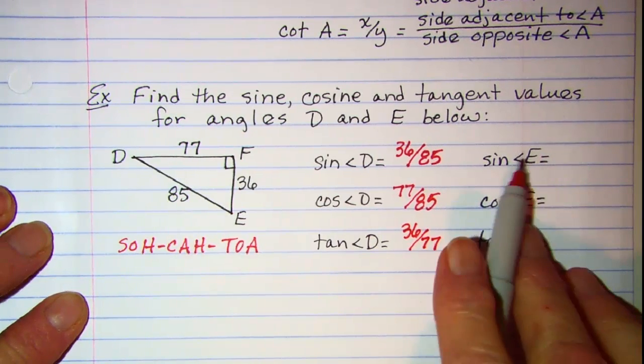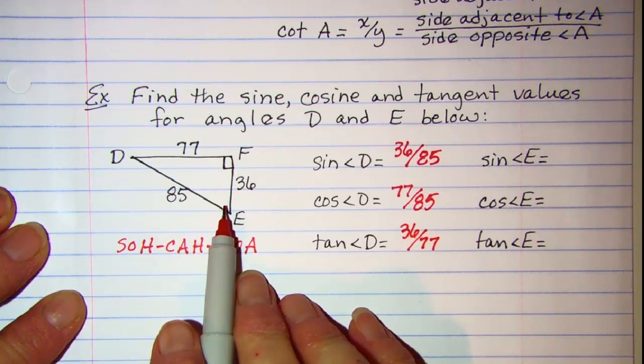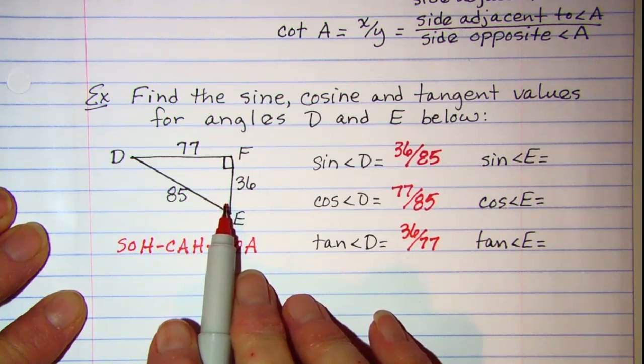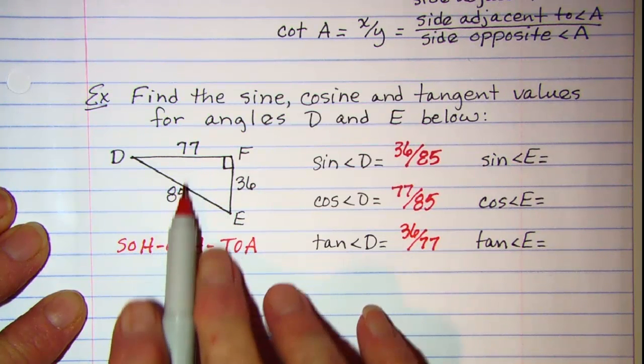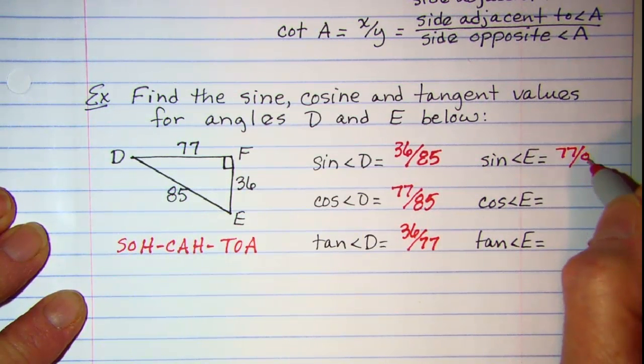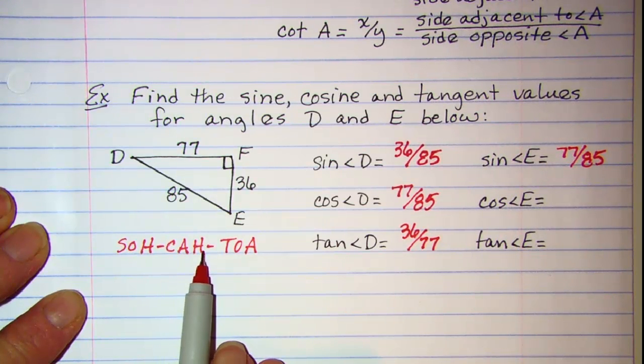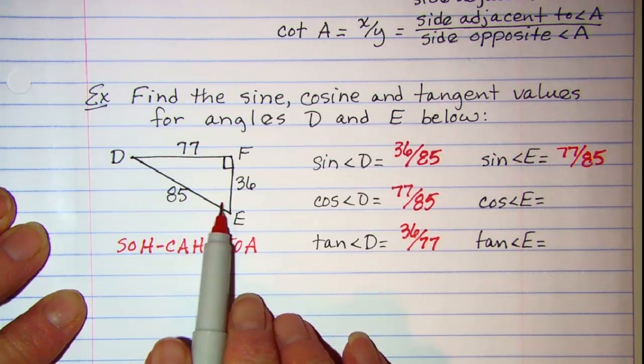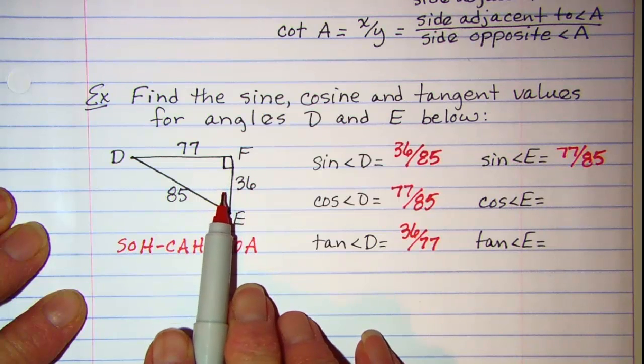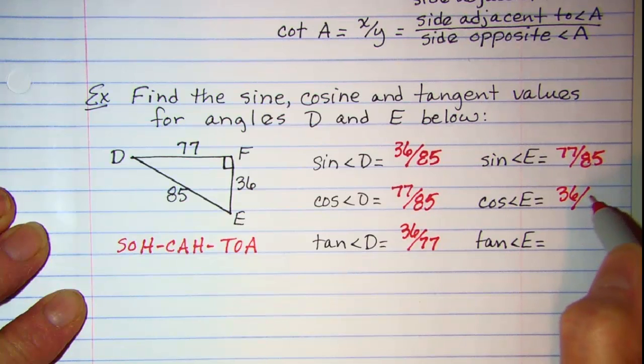Now if we're going to look at angle E, I need to sit in angle E and my sine is opposite over hypotenuse. So I need 77 over 85. My cosine is adjacent over hypotenuse. So we're sitting in angle E, my adjacent side is the 36 and my hypotenuse is the 85, so 36 over 85.